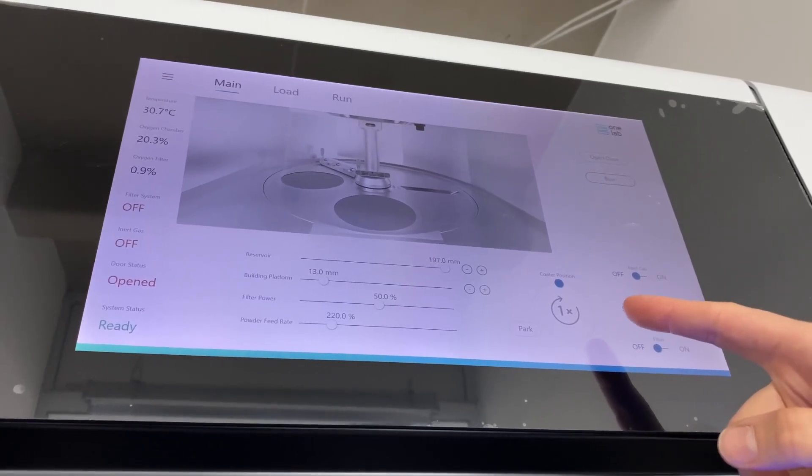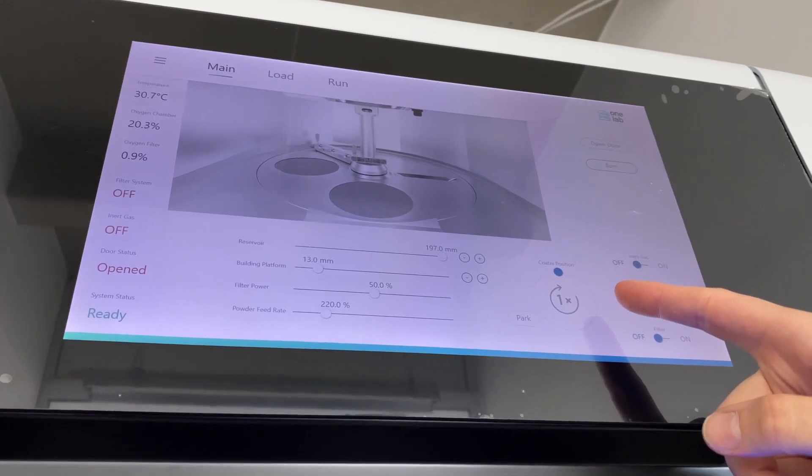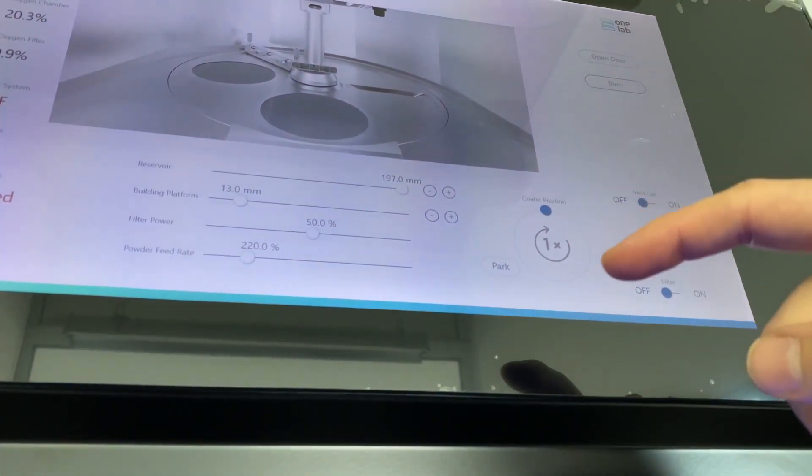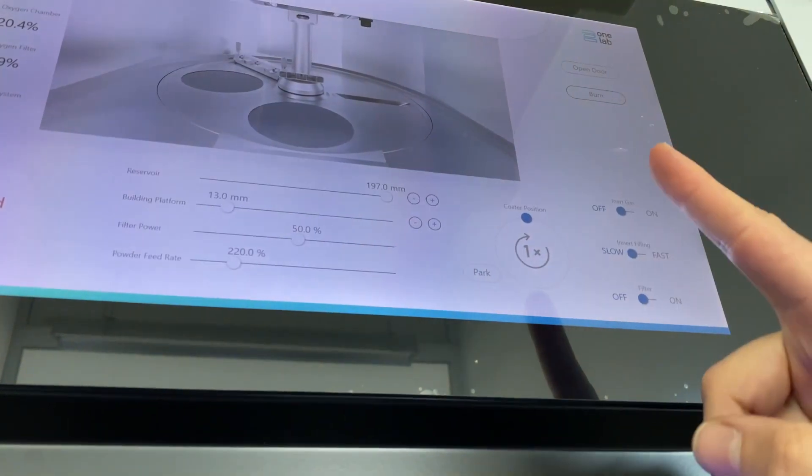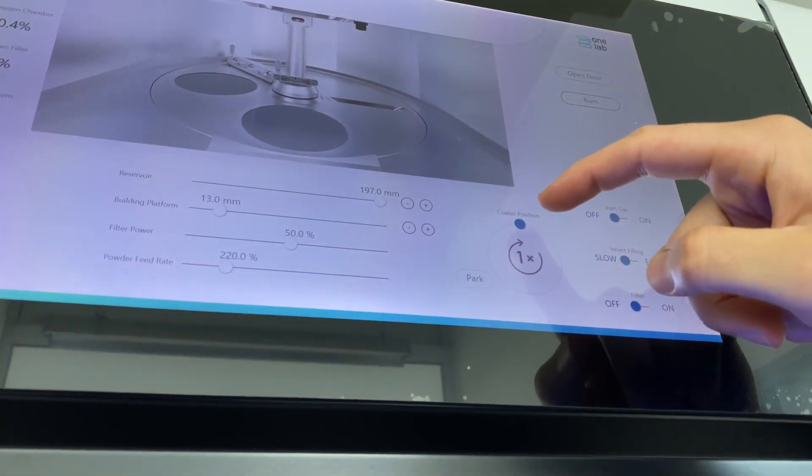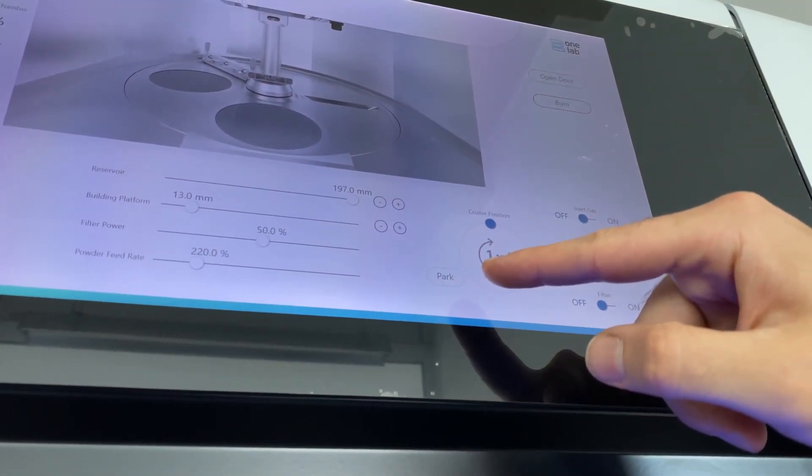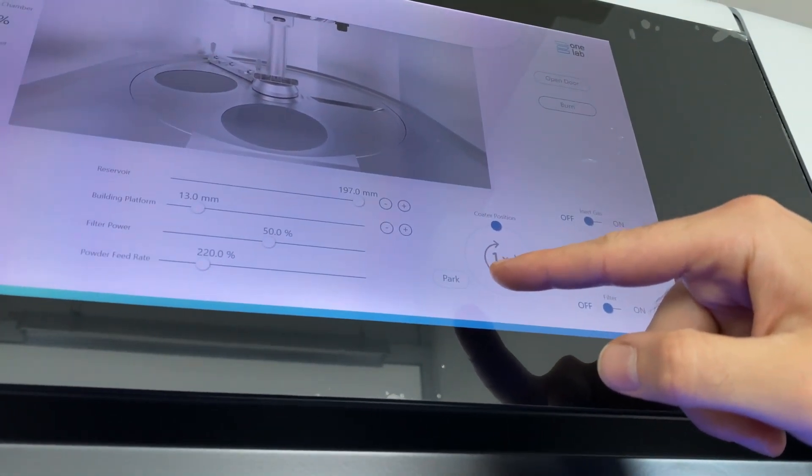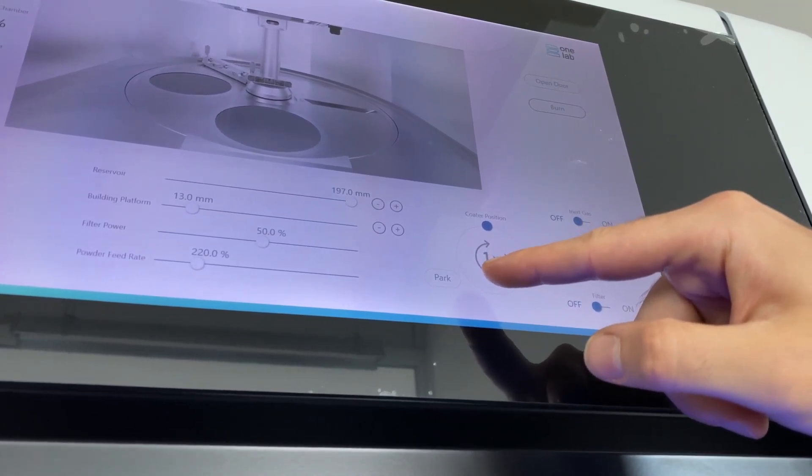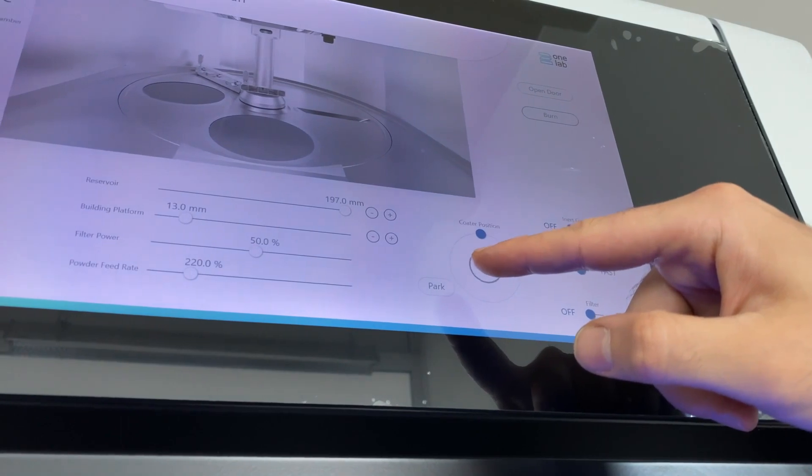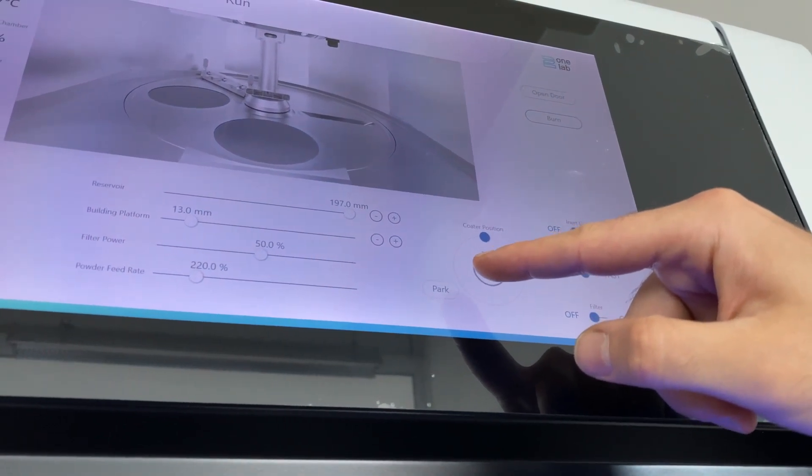The coater is a little bit different. You have three options to move it. The button in the middle, when you press it, does a whole 360 degree turn, wherever the position is. You can just put it to any position manually. Or you can just push this button, which brings it first to the park position, which is between the building platform and the powder platform. And the back position, which is on the opposite side, so you can remove the powder.